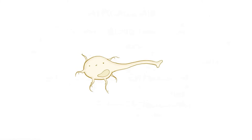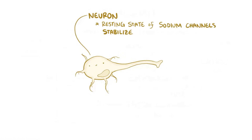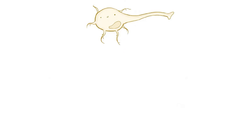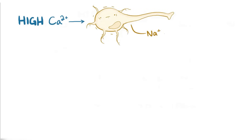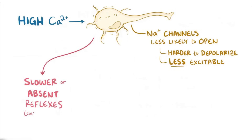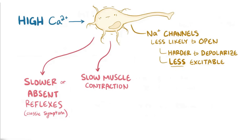High levels of ionized calcium affect a variety of cellular processes, in particular electrically active neurons. Normally, calcium ions stabilize the resting state of the sodium channels, which prevents them from spontaneously opening and letting sodium ions enter the cell. With high levels of extracellular calcium, voltage-gated sodium channels are less likely to open up, which makes it harder to reach depolarization and makes the neuron less excitable. This causes slower or absent reflexes, a classic symptom of hypercalcemia.